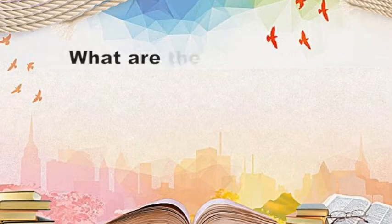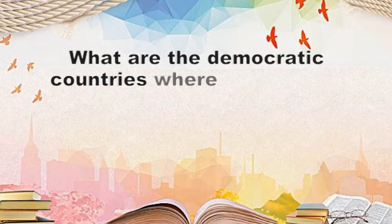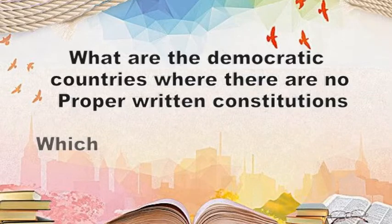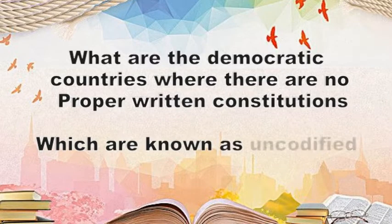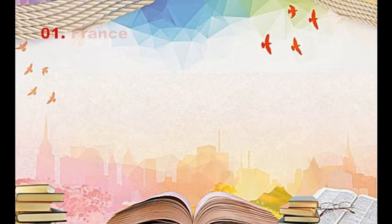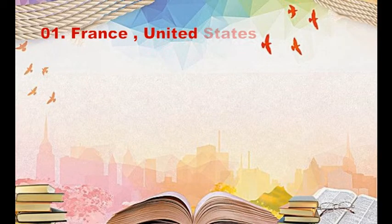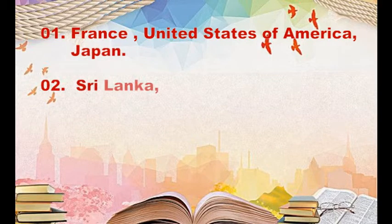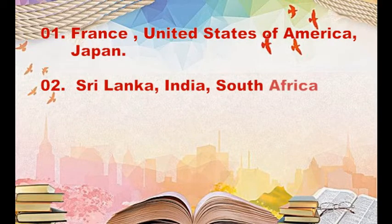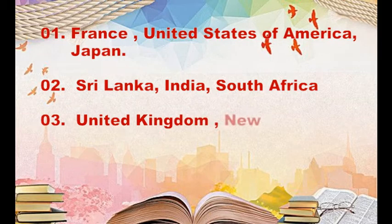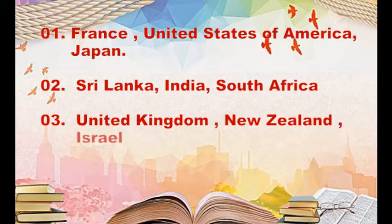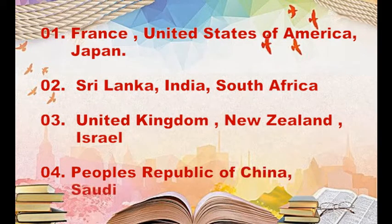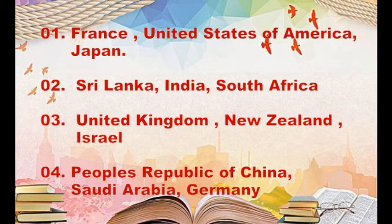Question 2: What are the democratic countries where there are no proper written Constitutions, known as uncodified Constitutions? 1. France, United States, Japan. 2. Sri Lanka, India, South Africa. 3. United Kingdom, New Zealand, Israel. 4. People's Republic of China, Saudi Arabia, Germany.